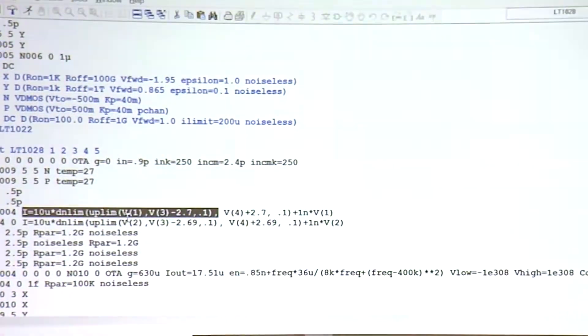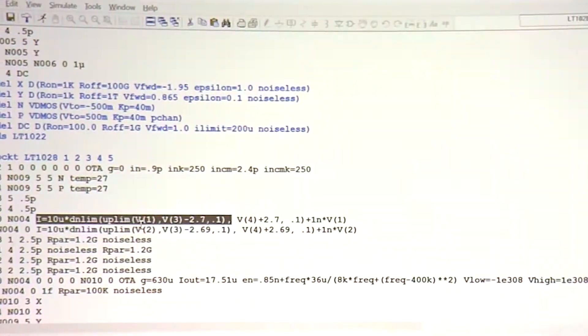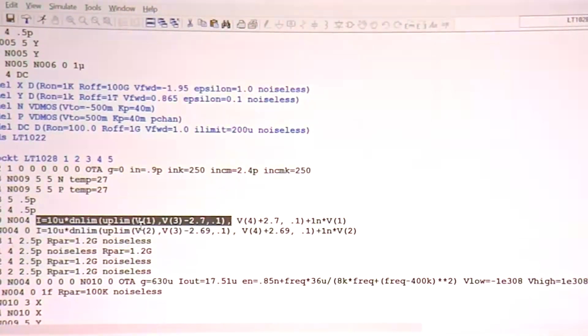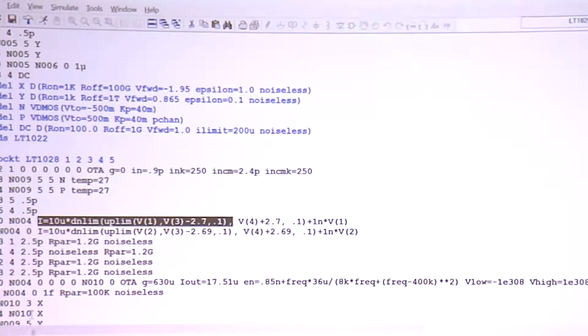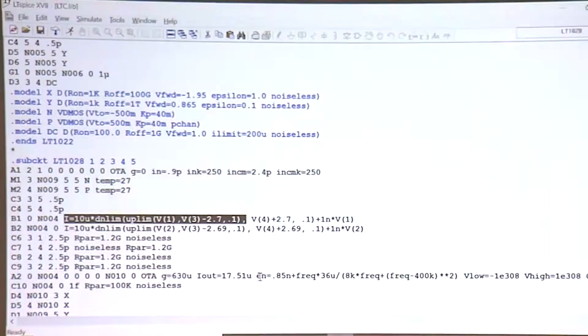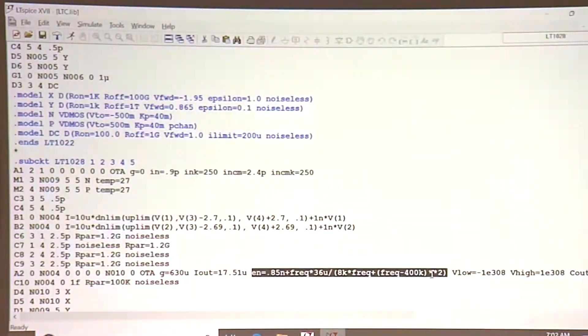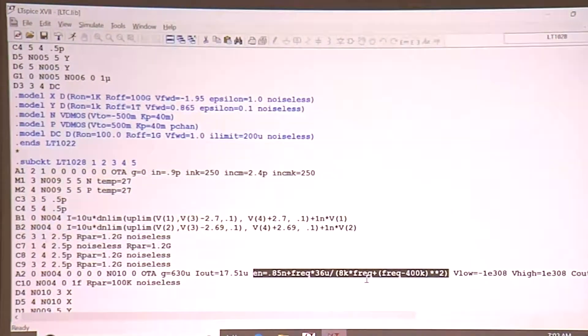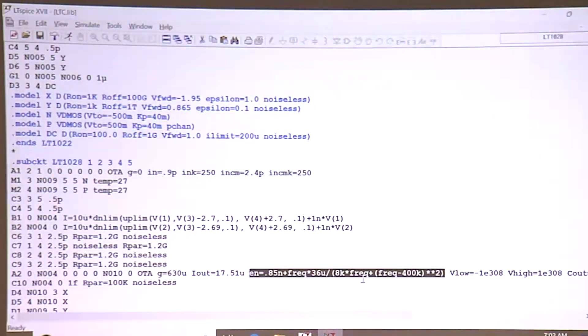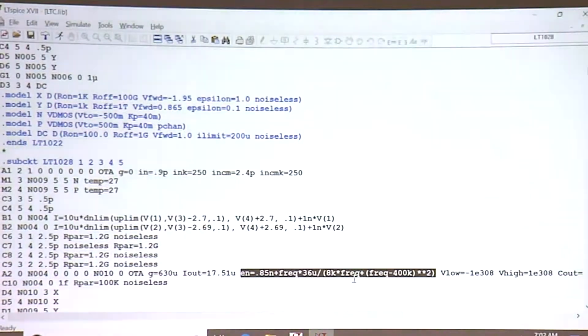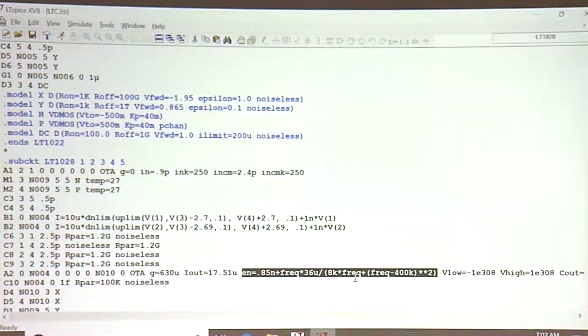And look at this. We have these functions called down limit and up limit. Those aren't in other Spice programs. This gives me a piecewise linear that has a continuous first derivative, so it's more solvable. Here's another A device. And look at it. Here's the noise density. This doesn't run in Tina TI. None of this technology is in Tina TI. So you couldn't have run a LTSpice model in Tina TI.